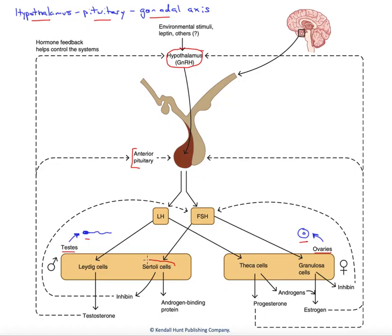In males, we have the Sertoli cells that are a nurse cell. In females, the corresponding cell is a granulosa cell. The secretory cells in males would be Leydig cells, while in females, they'd be theca cells.